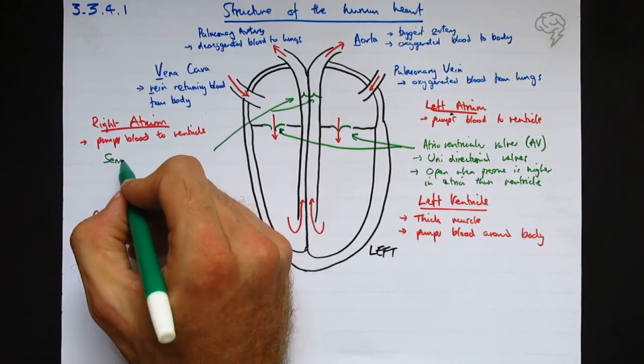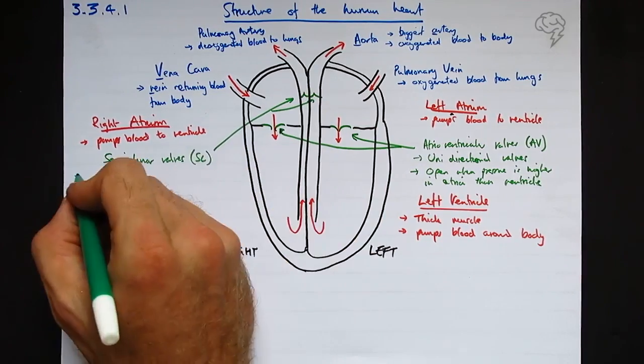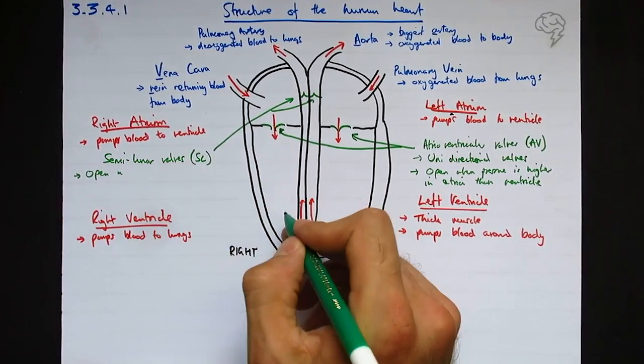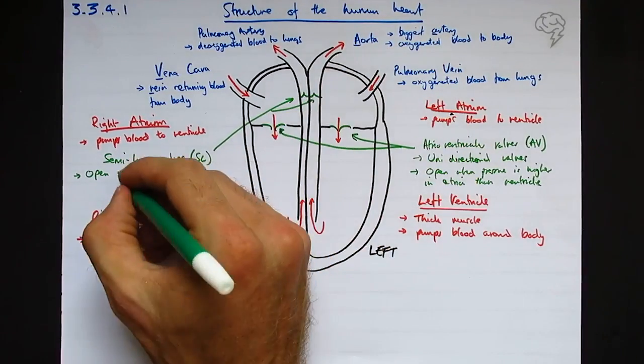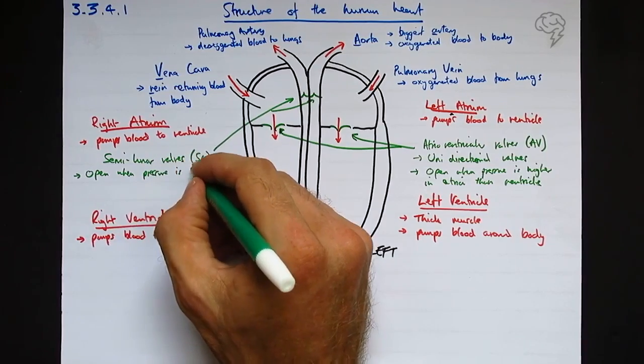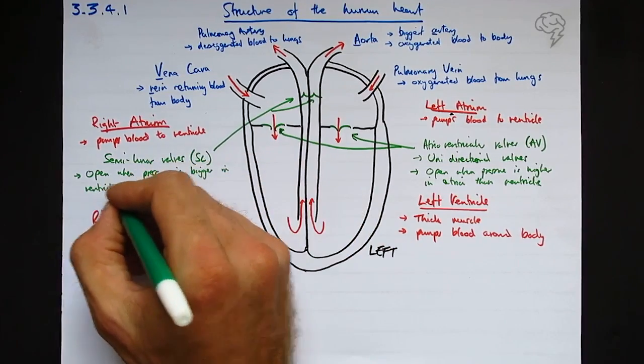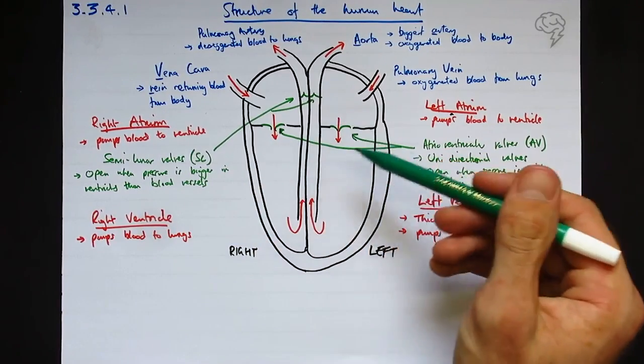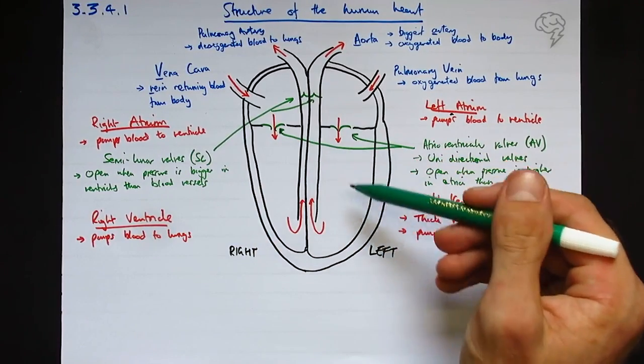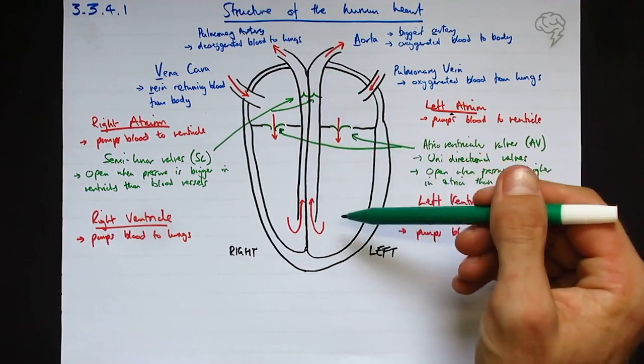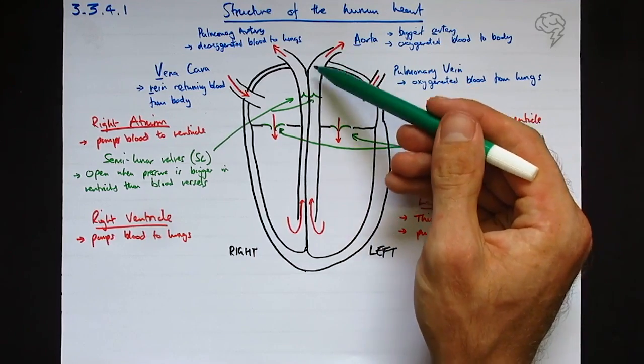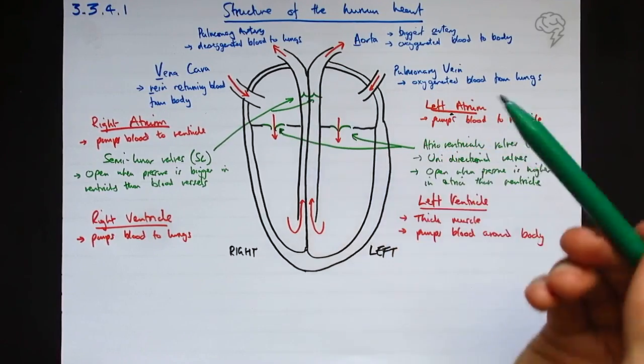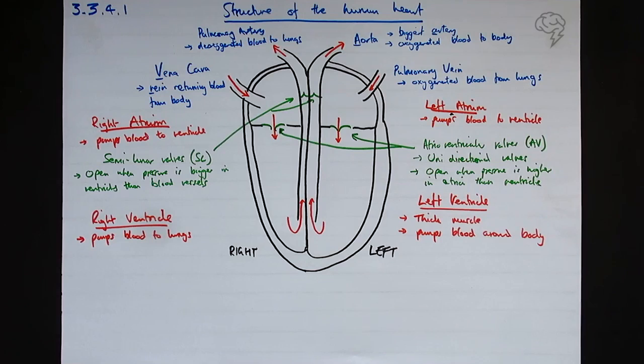These two, they have a different name - I did mention them, they're called the semilunar valves. Again, they ensure that blood is unidirectional. They open when the pressure is greater in the ventricles than in the blood vessels above. When is the pressure not greater? Well, when the ventricles are relaxing and refilling, then the pressure in here is low and gravity will be pushing the blood back down, but it can't come back down because the valves are one-way valves, a bit like lobster pots - there's one way in but no way out.